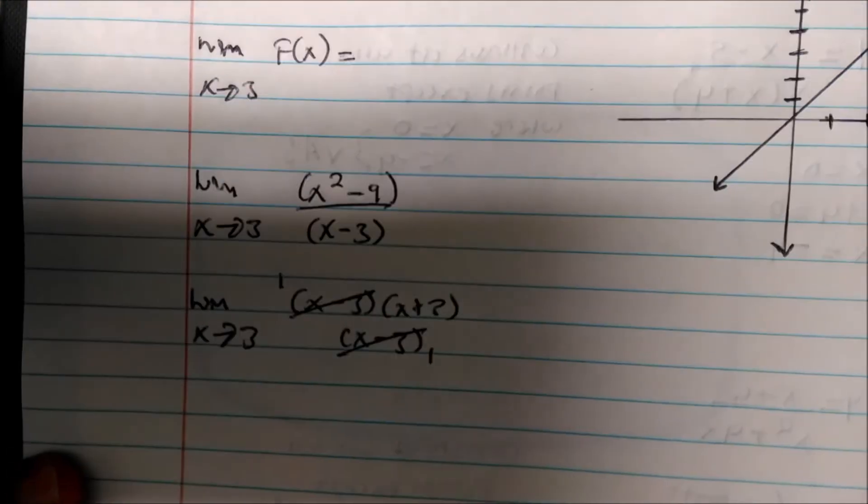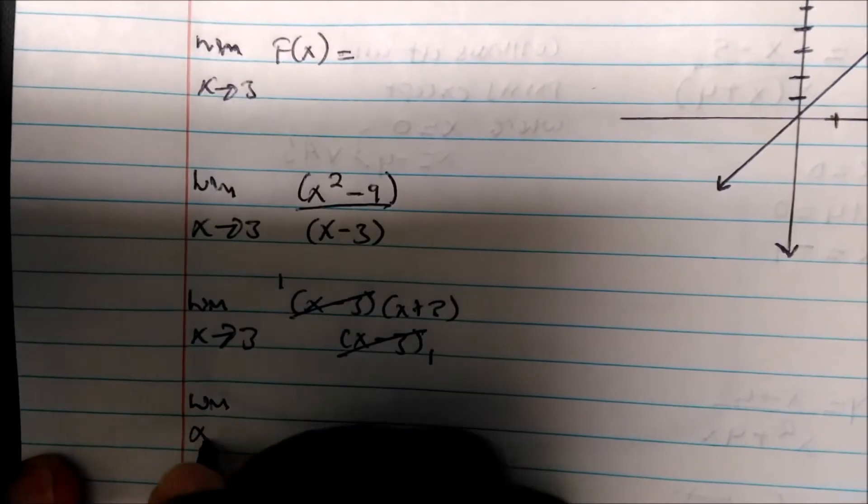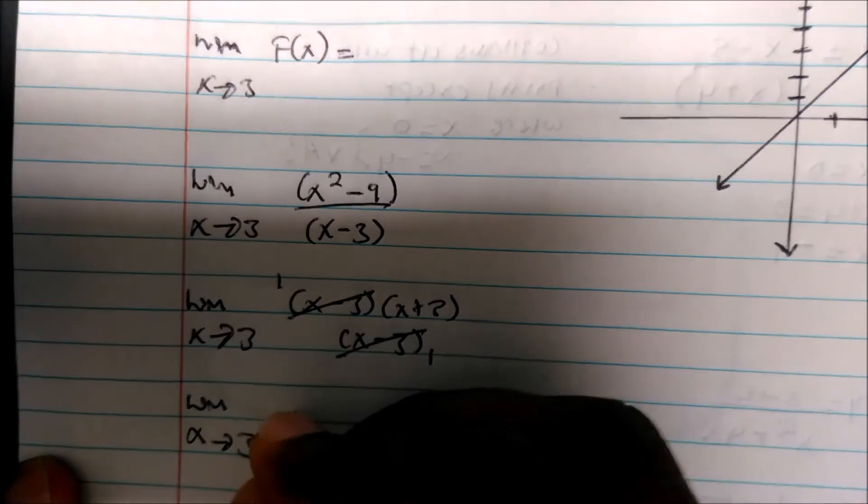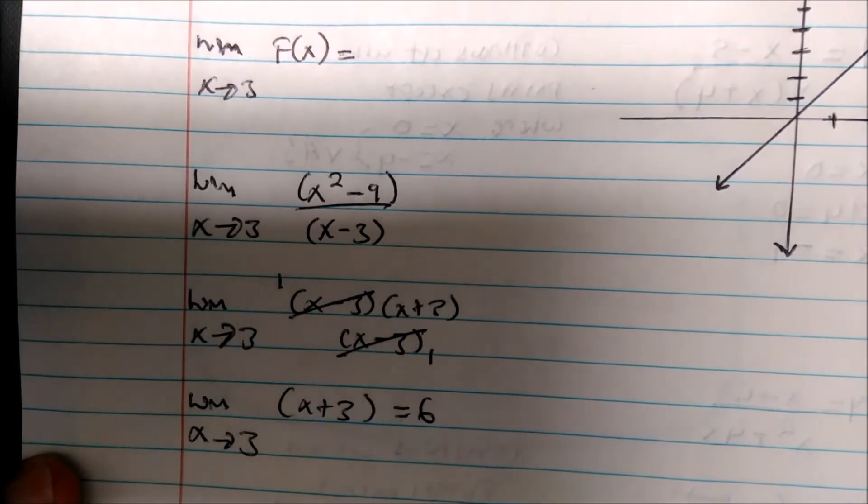We can cancel these factors, and so the limit as x approaches 3 of (x plus 3) is actually 6.